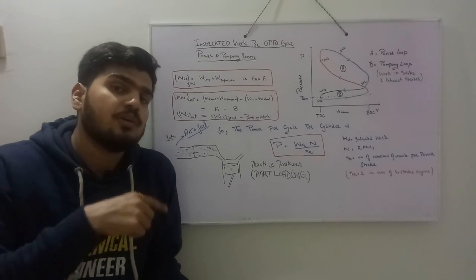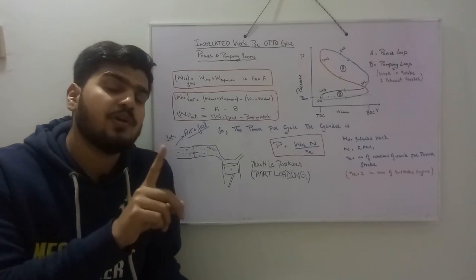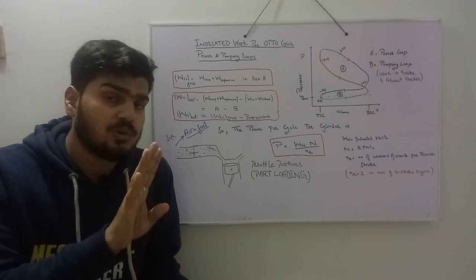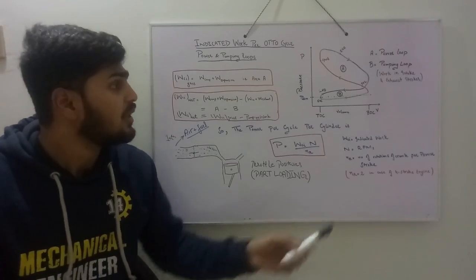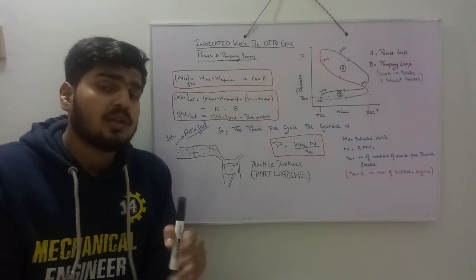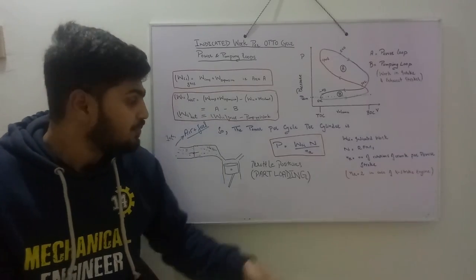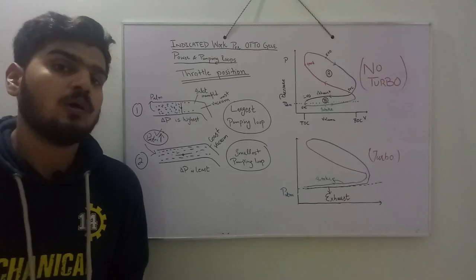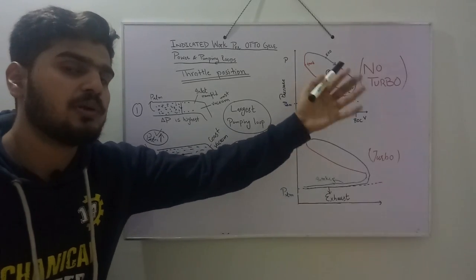In a four-stroke engine, after two crank rotations there is one power stroke, so nr equals two. In a two-stroke engine, nr equals one. Now let's talk about the pumping loop and how to reduce it.